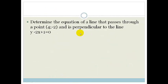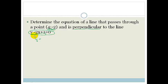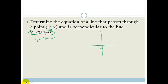Let's do another example. It says determine the equation of the line that passes through the point (4, -2), but this time it's perpendicular to the line y is equal to minus 2x plus 1. So again, what are we going to do? We're going to solve this for y — make y the subject of the formula. So we've got y is equal to 2x minus 1.